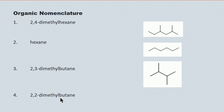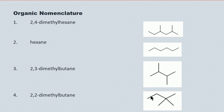2,2-dimethylbutane — a similar molecule. We see the butane: one, two, three, four. But you see two methyl groups both coming off the second carbon in that longest chain.